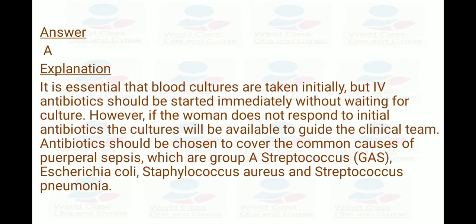The answer is A. It is essential that blood cultures are taken initially, but IV antibiotics should be started immediately without waiting for culture. However, if the woman does not respond to initial antibiotics, the culture will be available to guide the clinical team. Antibiotics should be chosen to cover the common causes of puerperal sepsis, which are Group A Streptococcus, E. coli, Staphylococcus aureus, and Streptococcus pneumoniae. Thank you so much, that was a description of the algorithm of GBS.